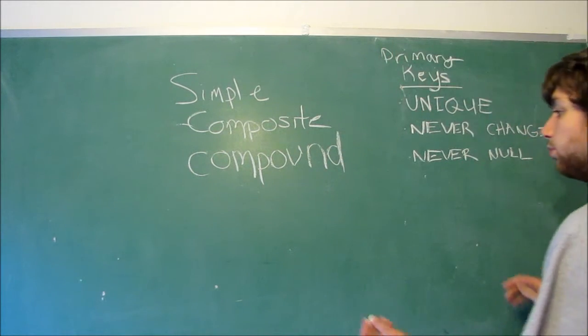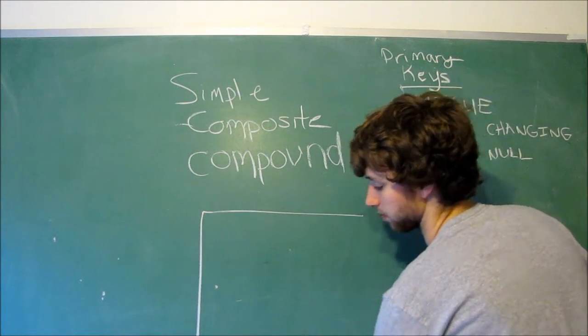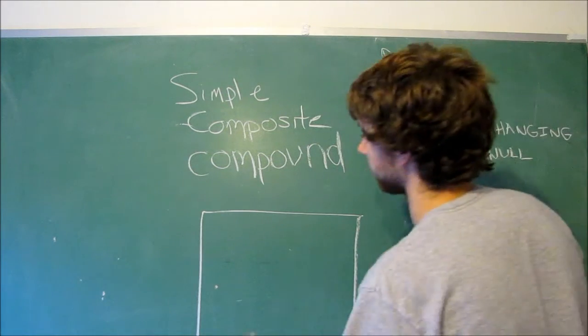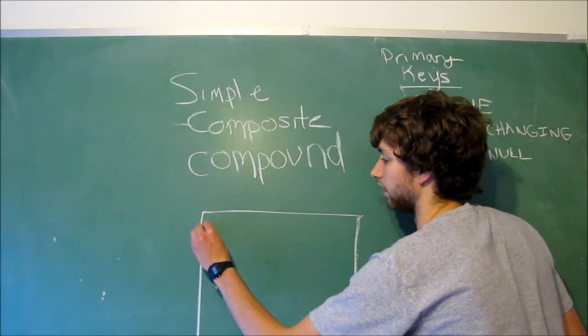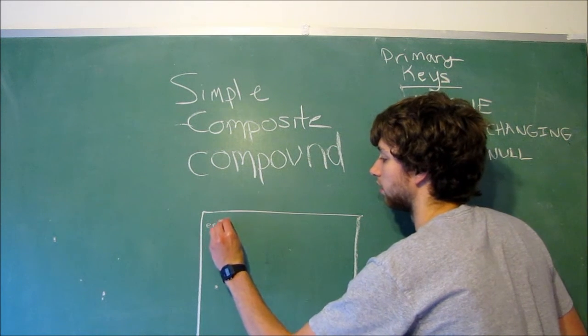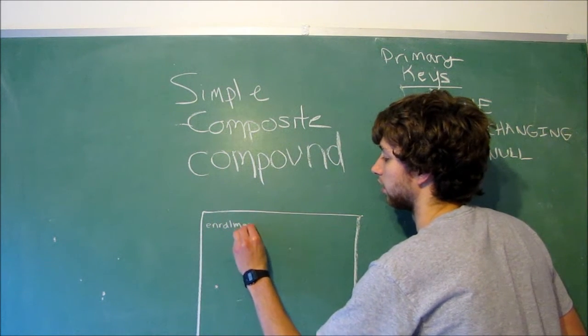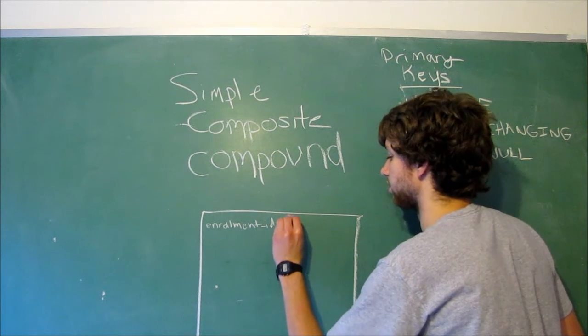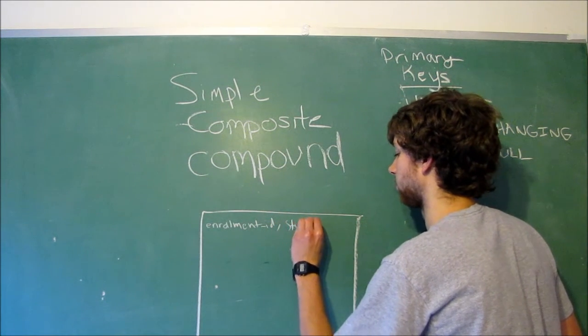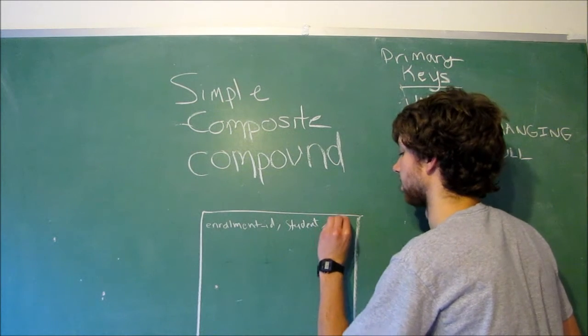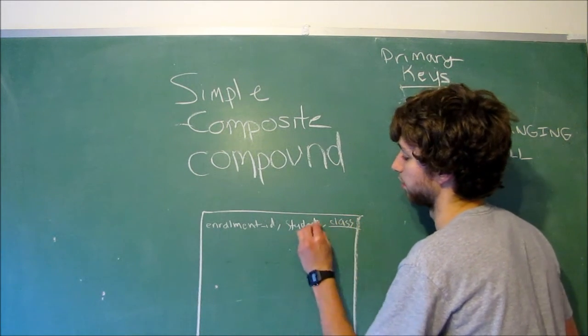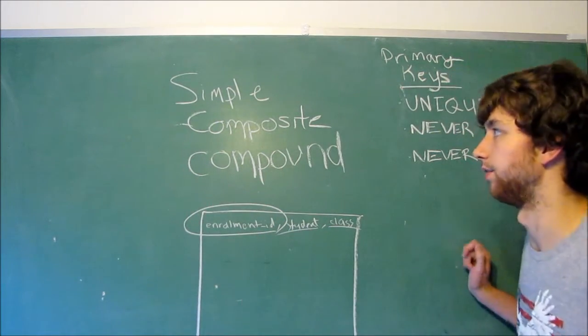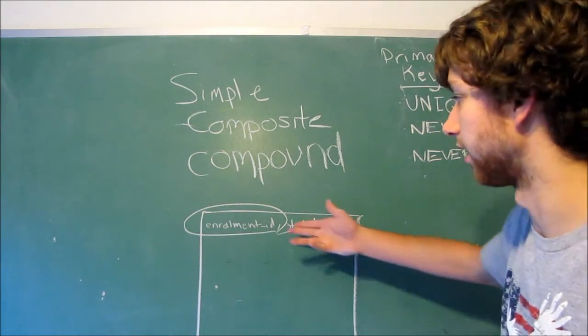So, for example, with the college, keep switching back and forth between examples. I'm probably confusing you. And they might add something such as the enrollment ID. And then we have the student ID. And then we have the class ID. These are both foreign keys, and they might use this enrollment ID as just a surrogate key for this table.